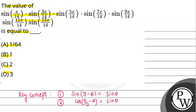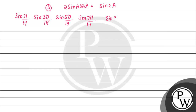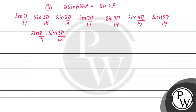We write out all the terms: sin(π/14), sin(3π/14), sin(5π/14), sin(7π/14), sin(9π/14), sin(11π/14), and sin(13π/14). The first three terms are already in their simplest form, so we keep them as is.